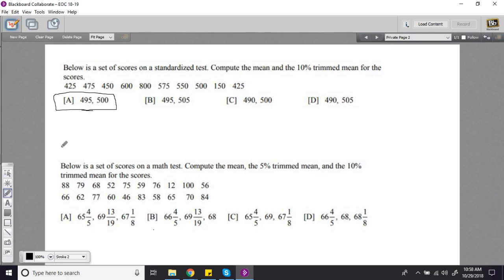Let's do one more like this. This problem says below is a set of scores on a math test. Compute the mean, the 5% trimmed mean, and the 10% trimmed mean for the scores. So I have typed this data in too, but let's think about what a 5% and 10% trimmed mean would look like. We've got 20 pieces of data here. So 10% of 20 is 2. So for the 10% trimmed mean, I'm going to chop off the bottom 2 and the top 2. For a 5% trimmed mean, that's half of 10, I'm going to chop off just one from the bottom and one from the top.